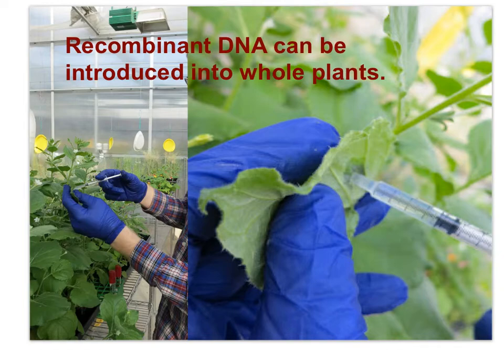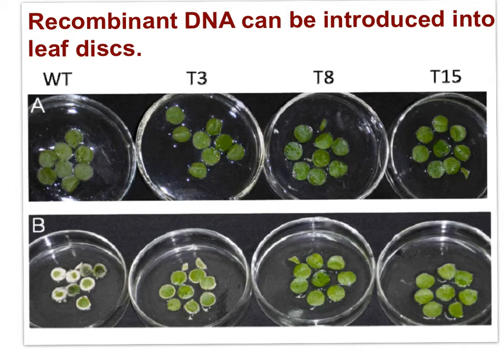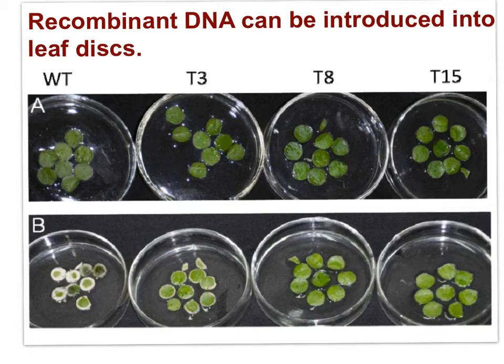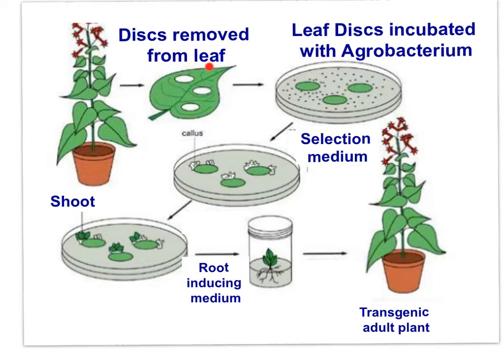Recombinant DNA can be introduced into whole plants using injection methods, and it can be introduced into leaf discs. In this image, three recombinant lines of tobacco leaf discs are compared with wild type. The four plant types were floated in water without salt and then floated in 400 millimolar NaCl for four days. The wild-type unmodified leaf discs were bleached, whereas the leaf discs from transgenic tobacco plants remained green.